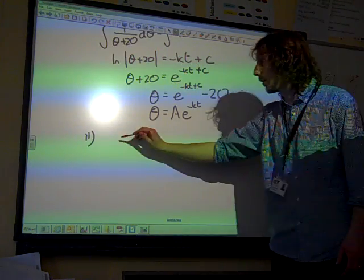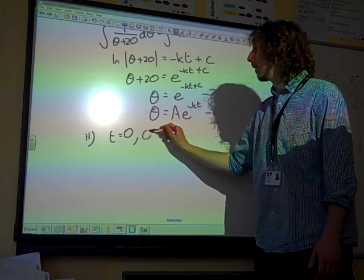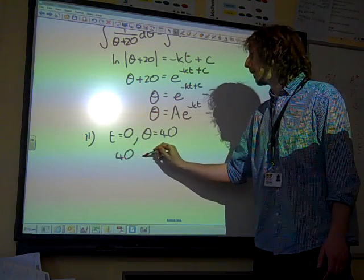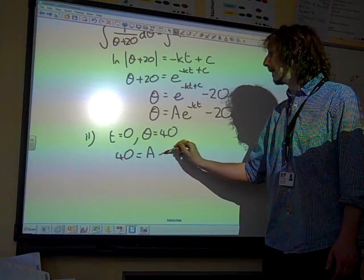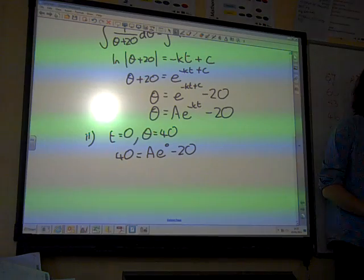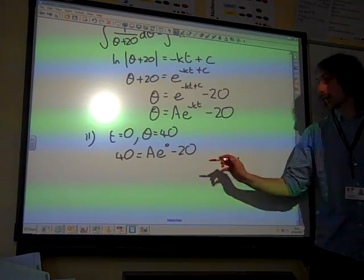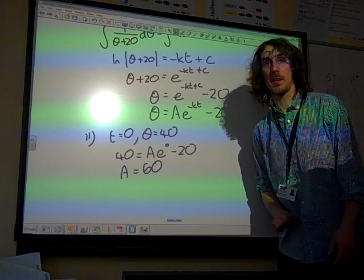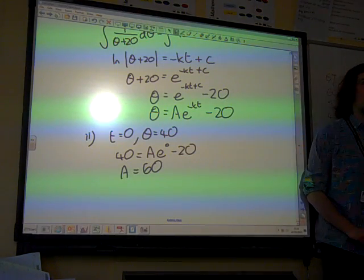How should we work our way through that? To start with, we've got that when t is zero, the temperature is 40. Let's see how that helps us. If t is zero, the temperature is 40. That means that 40 = Ae^0 - 20. If we rearrange that, our constant then is 60. So that's quite a good start.